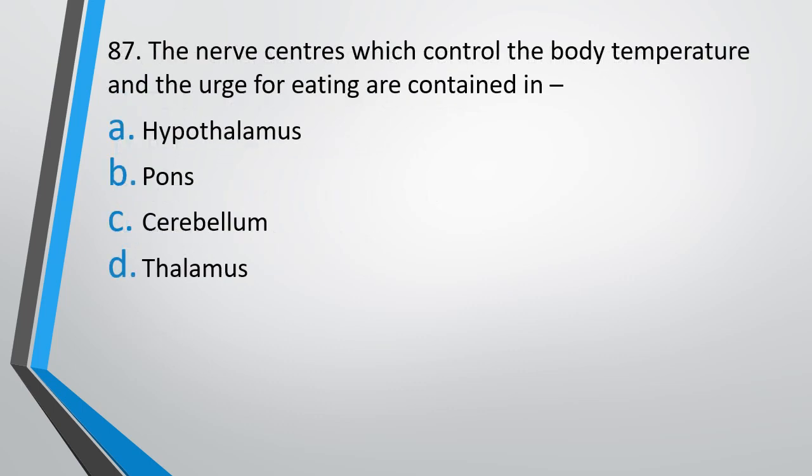Question number 87. The nerve centers which control the body temperature and urge for eating are contained in — what is the location of the centers for control of body temperature and urge of eating? Options: hypothalamus, pons, cerebellum, or thalamus. The correct answer is option A, hypothalamus.